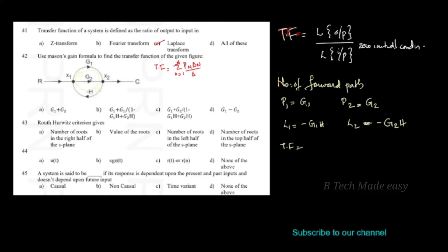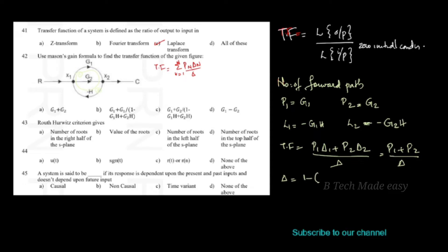The transfer function formula uses K equal to 1 to N, here K equals 1 to 2. So we have P1·Δ1 plus P2·Δ2 divided by Δ. For the first forward path, cofactor Δ1 equals 1. For the second forward path, Δ2 equals 1. Delta is 1 minus (L1 plus L2).